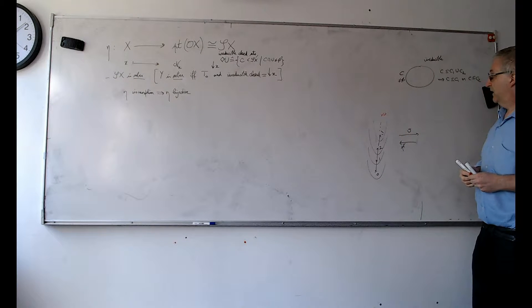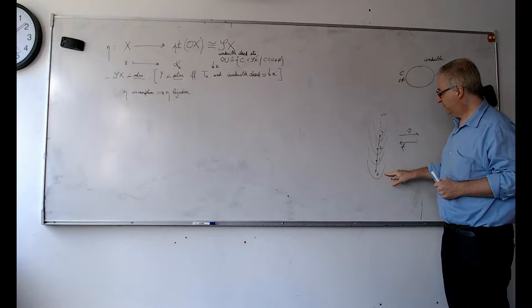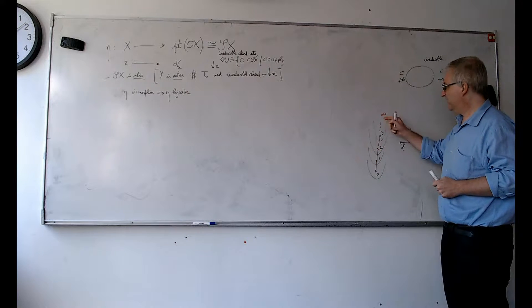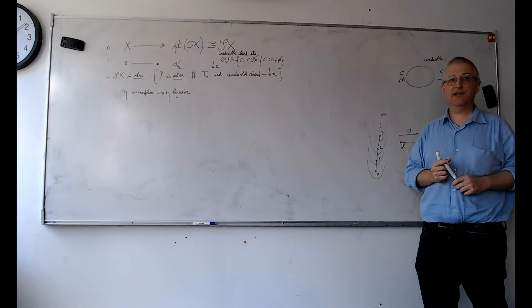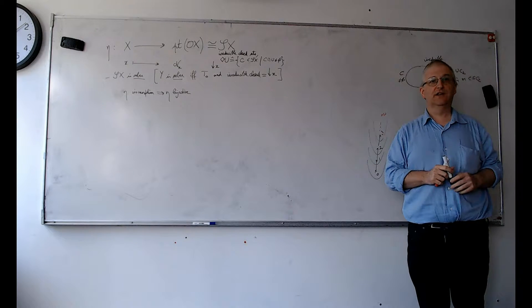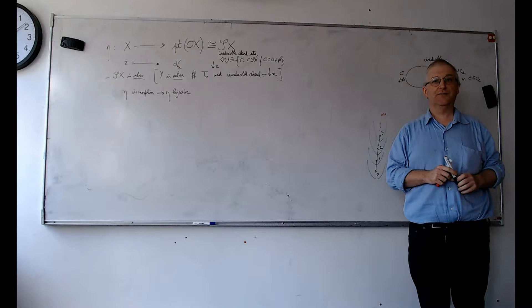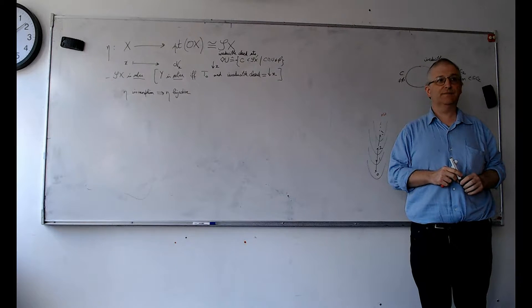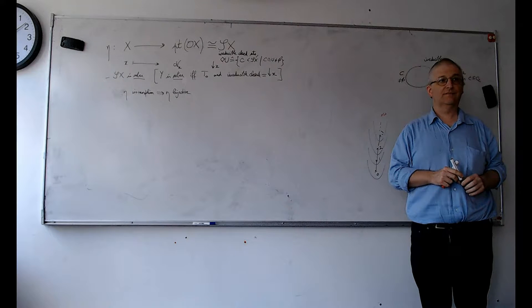The map η sends 0 to 0, 1 to 1, 2 to 2, and so on, but ω is not reached. So η in that case is not bijective, meaning that space cannot be sober.